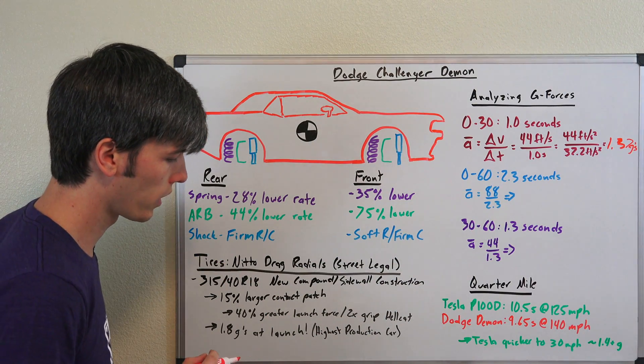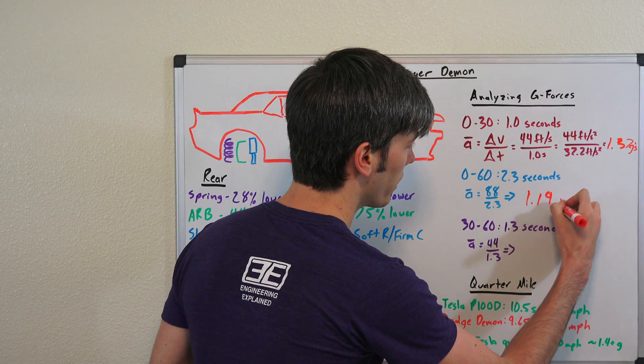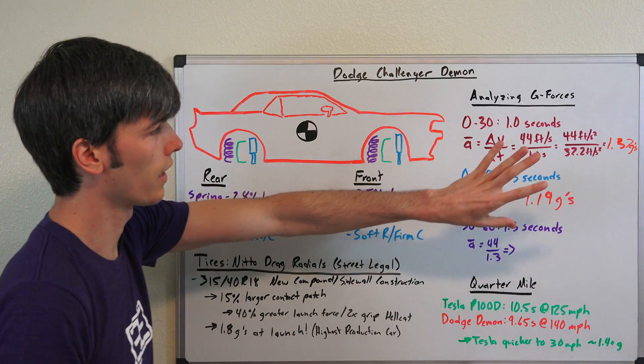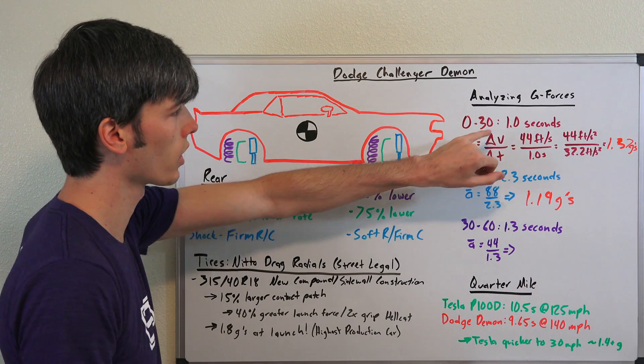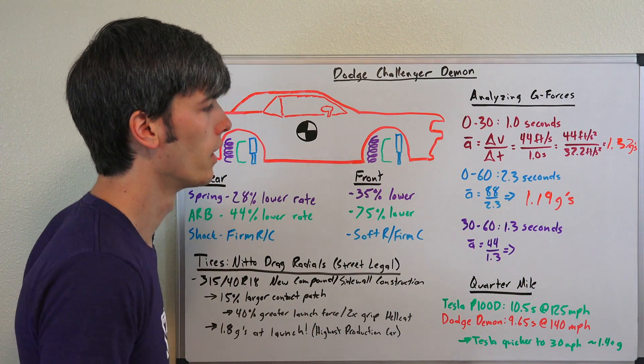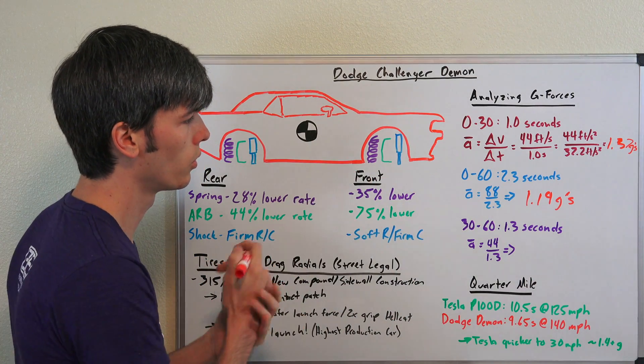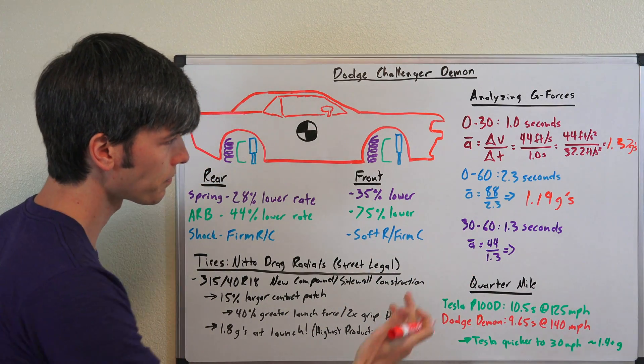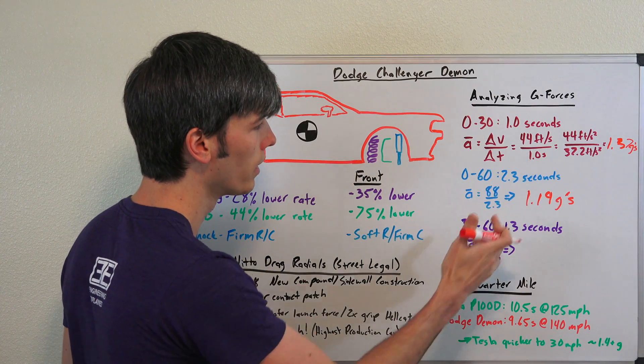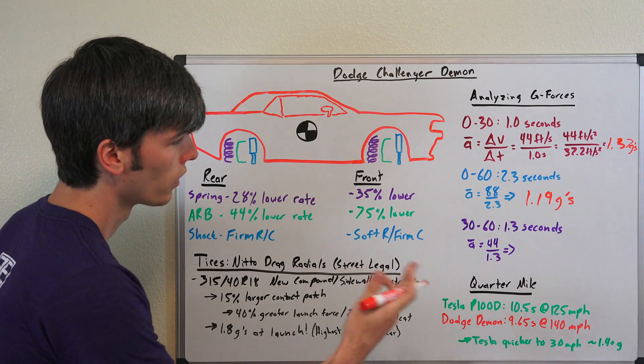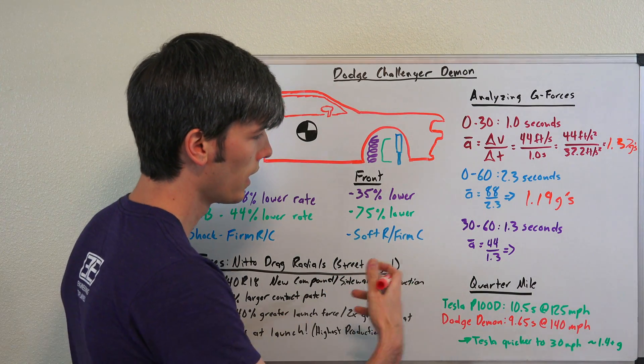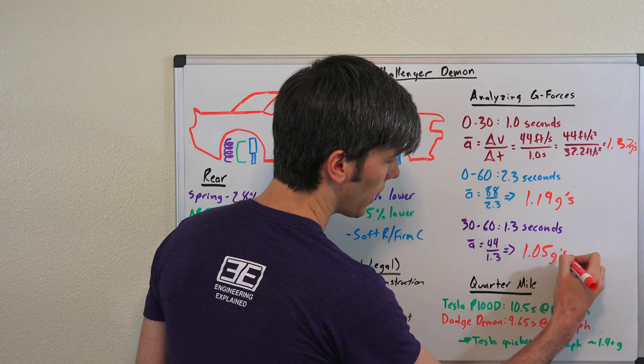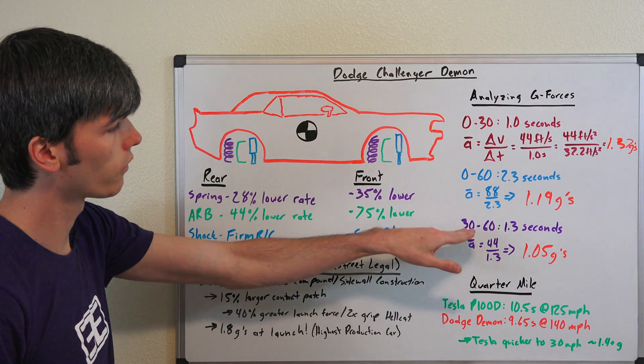Moving on, 1.37 G's, 0 to 30, 0 to 60, 2.3 seconds. That is equal to 1.19 G's when we do the math as far as acceleration. This is excluding one foot of rollout. So if we look at the 30 to 60 time, that's not going to have any rollout included in it. It's able to do 60 in 2.3, 30 in 1, subtract the difference is 1.3 seconds. So if we do the math 44 feet per second in 1.3 seconds, that's going to give us a G-force of 1.05 G's. That's the average G-force that the car is accelerating from 30 to 60 miles per hour.